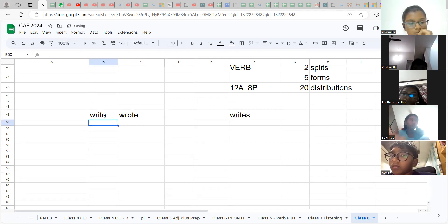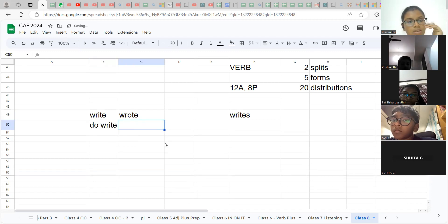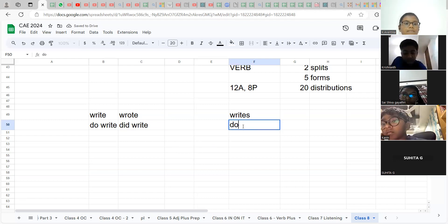How do you split write into 2? Abhantika. 2 plus write. 2 plus write. How do you split wrote into 2? Red plus write. Red plus write. So how do you split writes into 2? 1 plus write. Right.